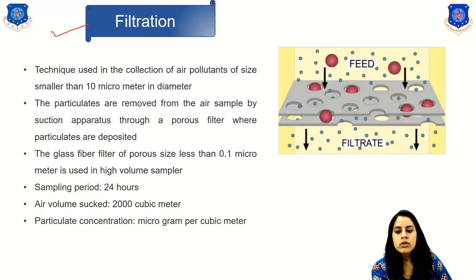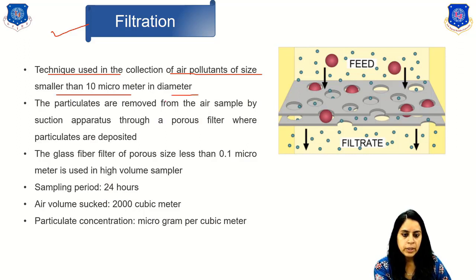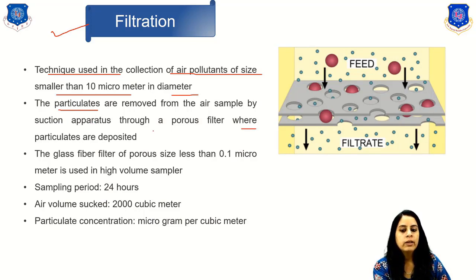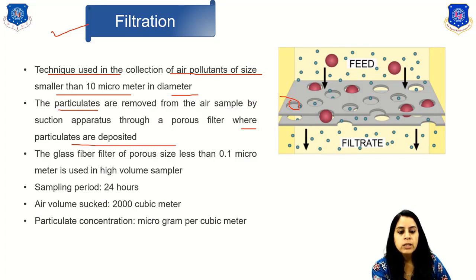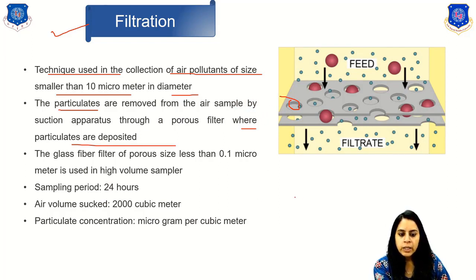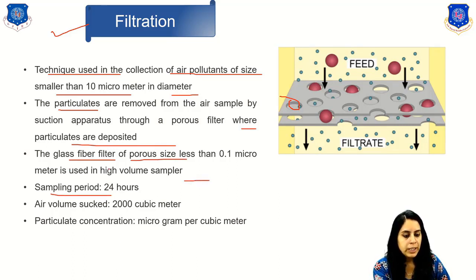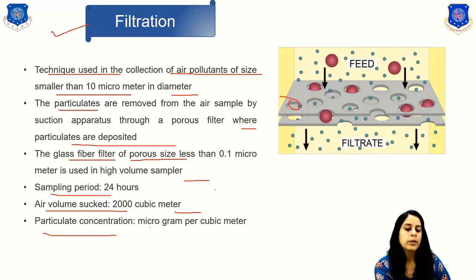The second technique is filtration. It is used to collect air pollutants of size smaller than 10 micrometers in diameter. Particulates are removed from the air sample by suction through a porous filter where the particulates are deposited. The particles are trapped in the filter plate and the clean gas exits. A glass fiber filter with pore size less than 0.1 micrometers is used in a high-volume sampler. The sampling period is 24 hours, with an air volume sampled of about 2000 cubic meters, and concentration is expressed in micrograms per cubic meter.